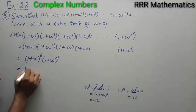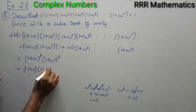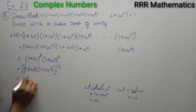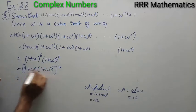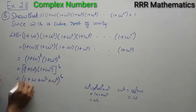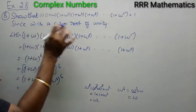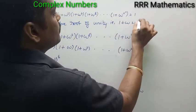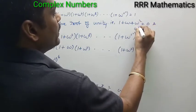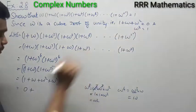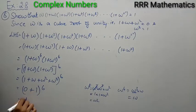Since the powers are the same, we can multiply the bases: [(1 + ω)(1 + ω²)]⁶. Expanding: 1·1 + 1·ω² + ω·1 + ω·ω² = 1 + ω² + ω + ω³. We know that 1 + ω + ω² = 0 and ω³ = 1 for cube roots of unity, so this becomes (0 + 1)⁶ = 1⁶ = 1, which equals the right-hand side. Proved.